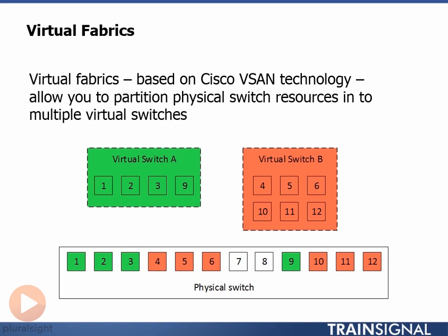And just in case it isn't obvious, each of our F-ports can only be a member of a single virtual switch. For example, we couldn't have put port 1 into both Virtual Switch A and Virtual Switch B.